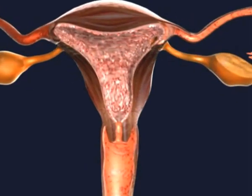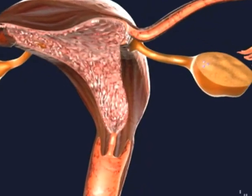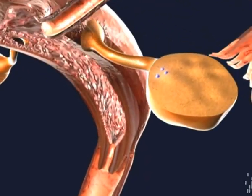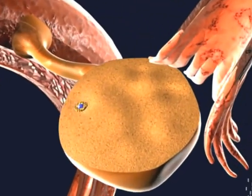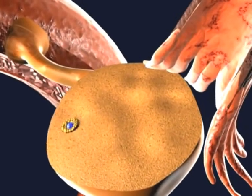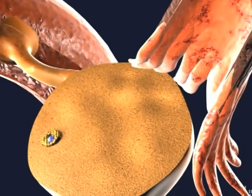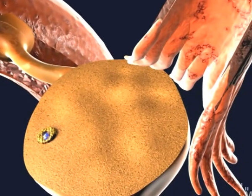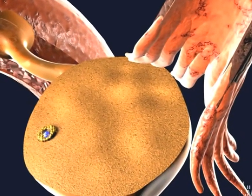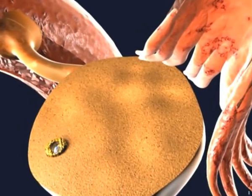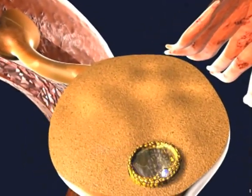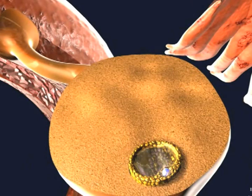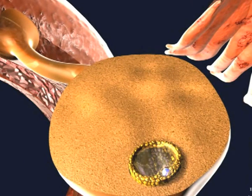At the start of the menstrual cycle, a cohort of follicles starts to grow, but generally only one continues to develop. This follicle is referred to as the dominant follicle. In its interior, the follicle contains an immature oocyte. This follicle increases in size by one to two millimeters per day.